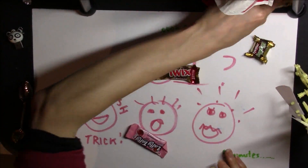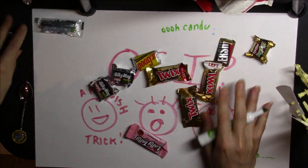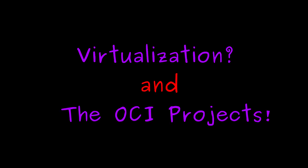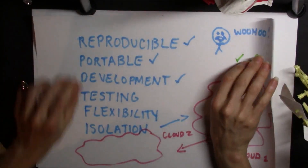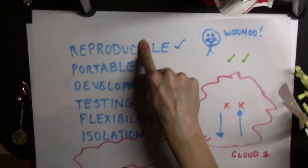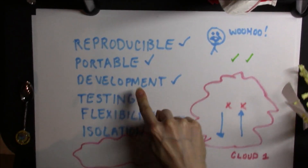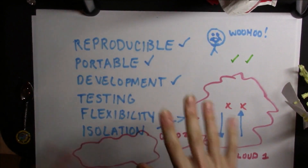Basically, we're going to go a little bit more into what virtualization is. And then we're going to talk about specifically what projects are owned by OCI that will help us to achieve these goals of reproducibility, portability, development environments, continuous integration, flexibility, and isolation.